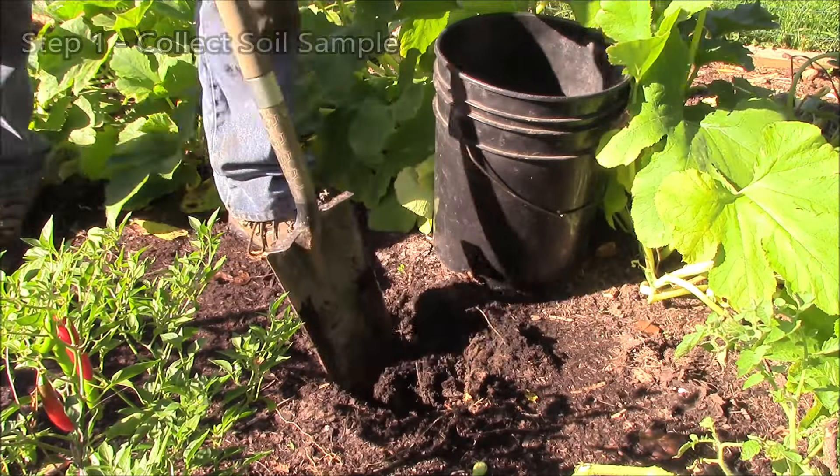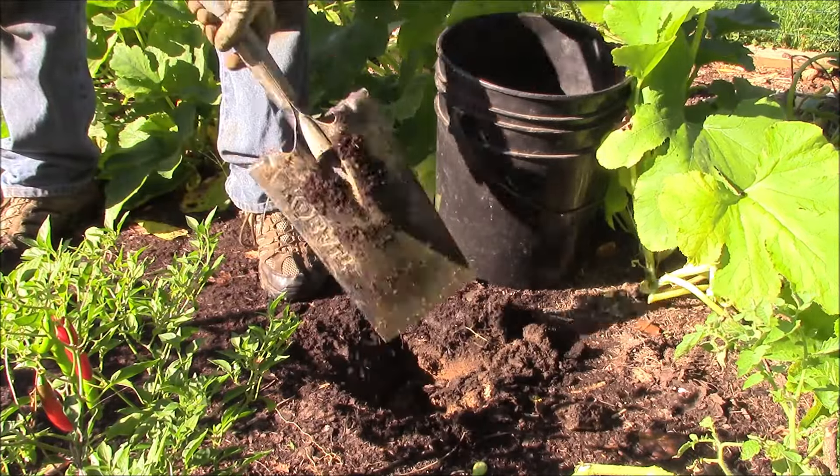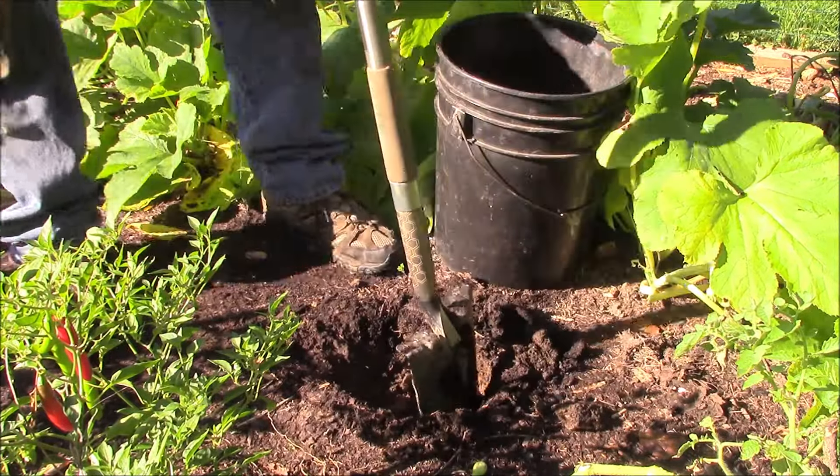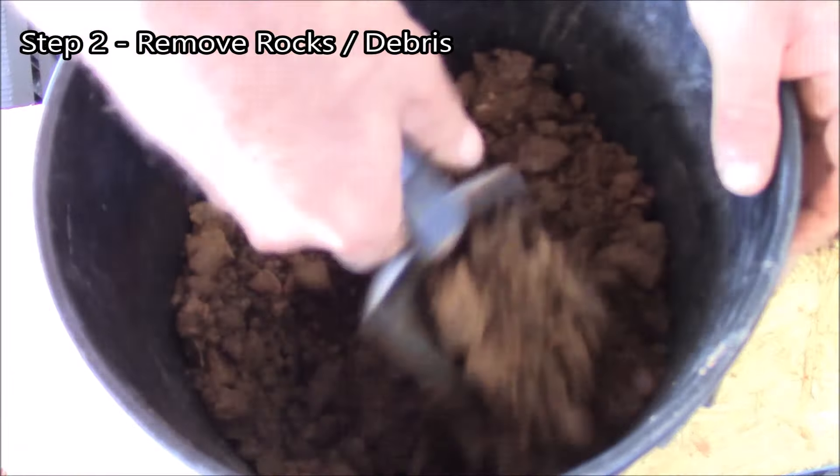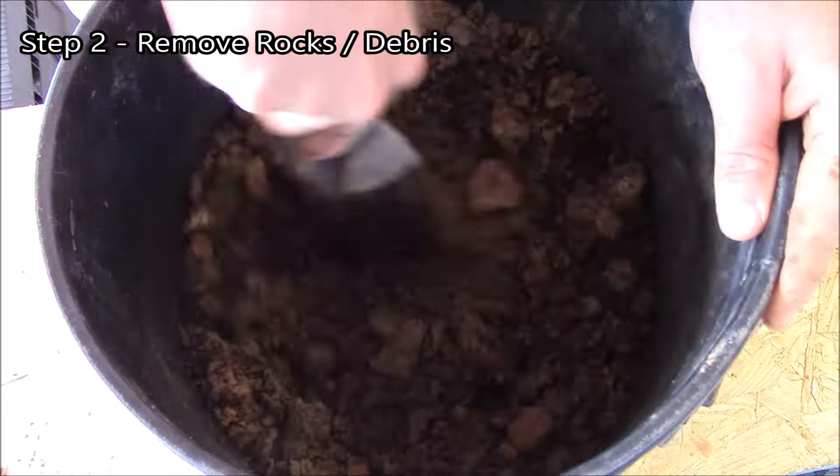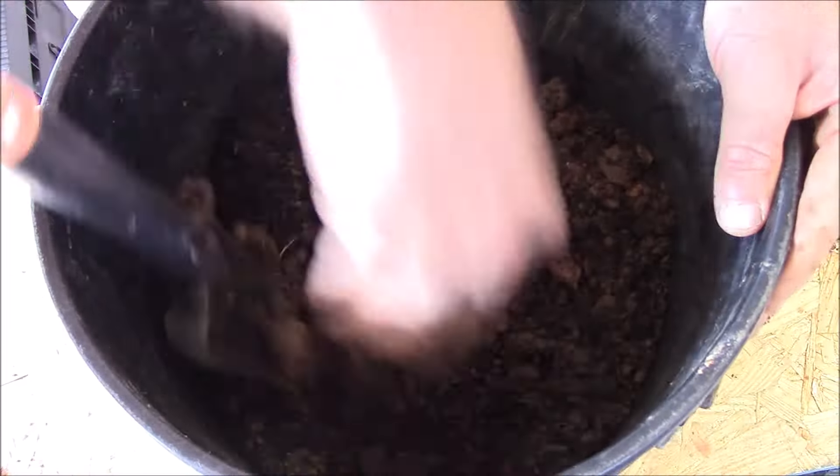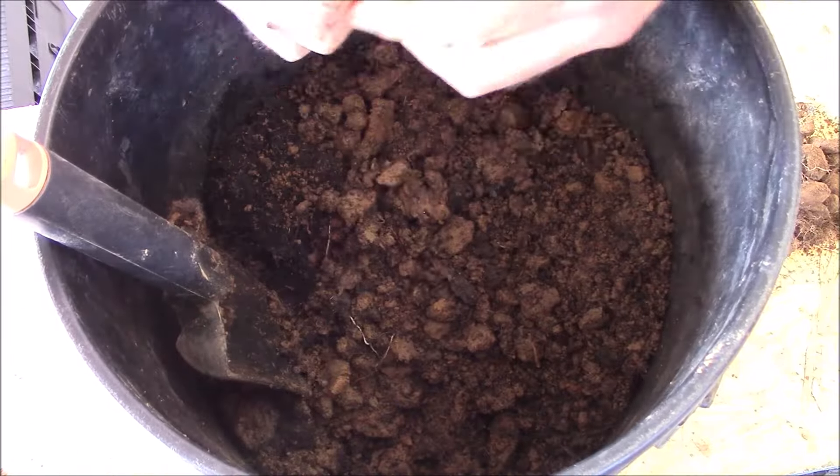Step one: we're going to get our soil sample. You'll want to dig down a decent cross-section, at least six inches or so. Mix up your soil sample very well and try to break up and identify any major rocks or organic matter you can remove.